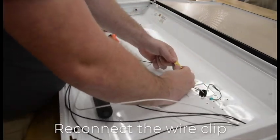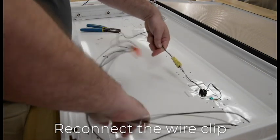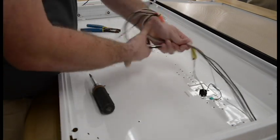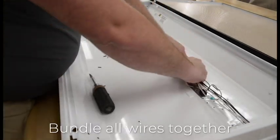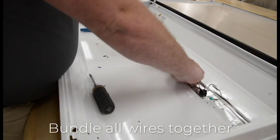Connect the wire clip from the unshunted lamp holder to the fixture's main power source. Bundle the wires together and cover with the ballast cover.